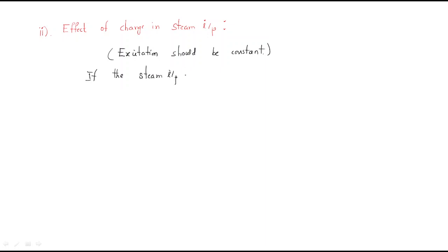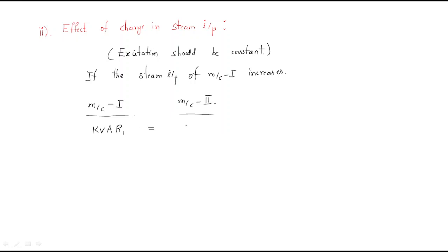For example, if the steam input of machine one increases, we look at machine one and machine two together. With excitation constant for both, kVAr1 equals kVAr2 — reactive power is the same. For active power, kW1 increases while kW2 is lower. Consequently, armature current ia1 is high and ia2 is low.